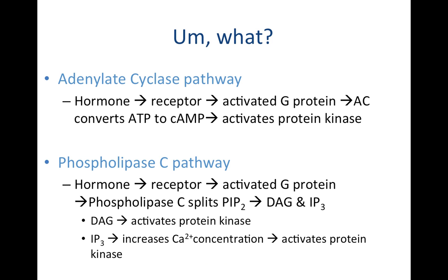Here's a step-by-step sequence of events. The adenylate cyclase pathway: your neurotransmitter binds to your receptor, the receptor activates your G-protein, which then activates adenylate cyclase. Adenylate cyclase's job is to convert ATP into cyclic AMP. Cyclic AMP can then activate protein kinases or adjust membrane permeability.